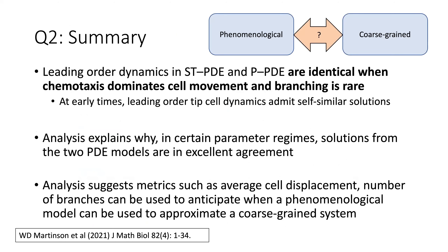To summarize: we are now in a position to use the ABM to generate a new set of PDEs inspired more carefully by the agent-based models. At first inspection the resulting PDEs look wholly different from the phenomenological models, yet we see good agreement between the numerical simulations. When we look at certain parameter regimes, we can systematically show why we see this good agreement — that the dominant balances in both models are actually the same at leading order. The details are explained much better in the reference at the bottom of the slide.